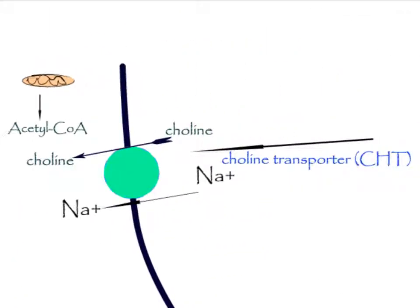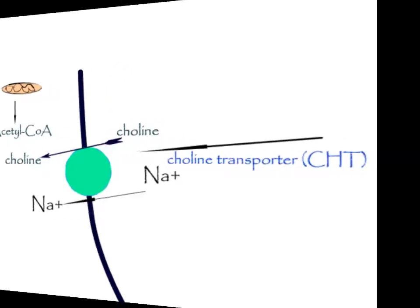The choline formed by metabolism is recycled through the process of reuptake by the presynaptic neuron. This process is mediated by a membrane protein that transports choline into the neuron.